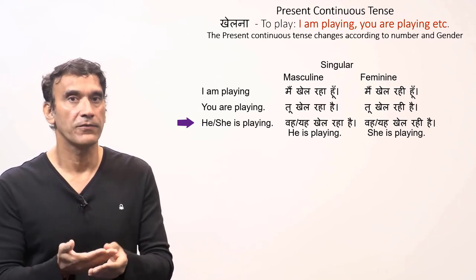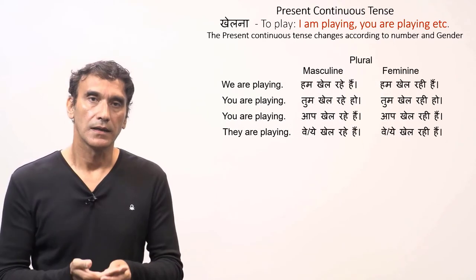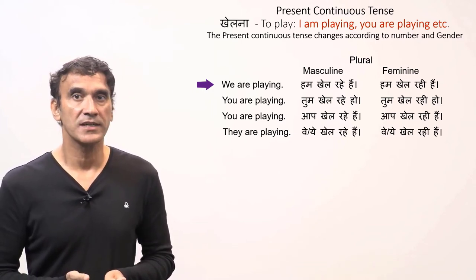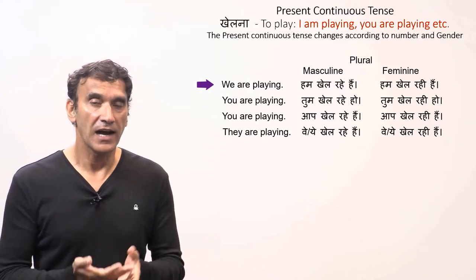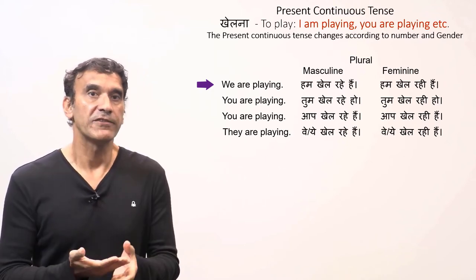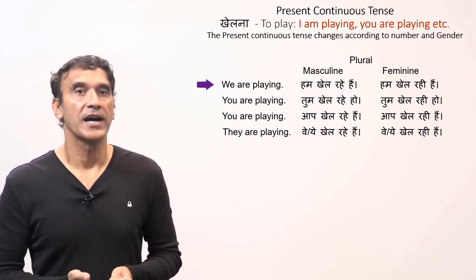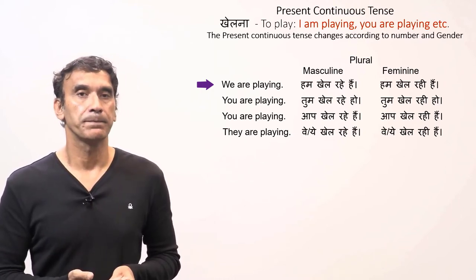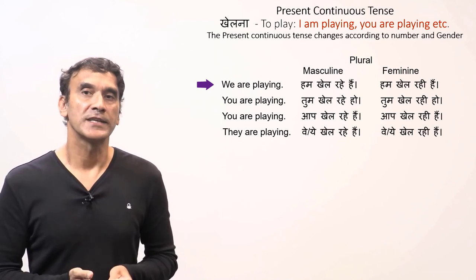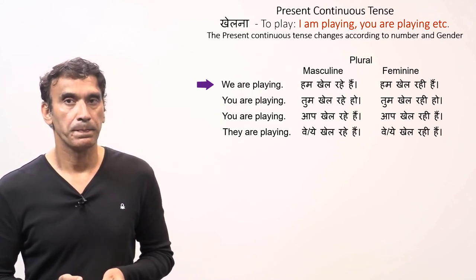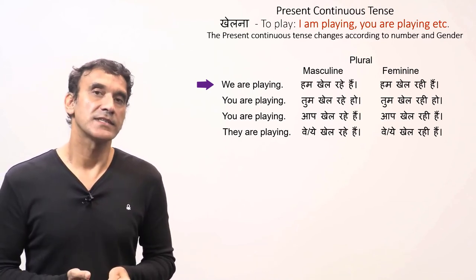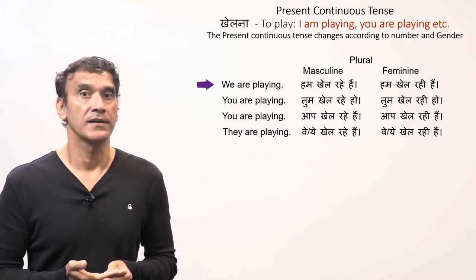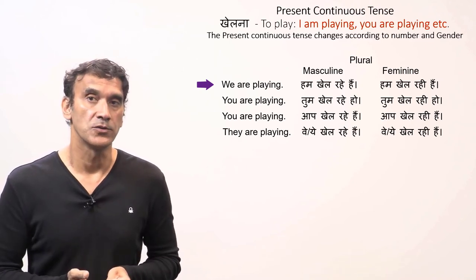Let's now take the plural forms. 'We are playing' in Hindi would be 'hum khel rahe hain' for a masculine subject, and 'hum khel rahi hain' for a feminine subject. A group of boys would say 'hum khel rahe hain', a group of girls would say 'hum khel rahi hain', and a mixed-gender group takes the masculine plural form. In these sentences you can see that the plural participle forms 'khel rahe' and 'khel rahi' are used, along with the plural form of the helping verb.